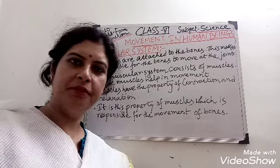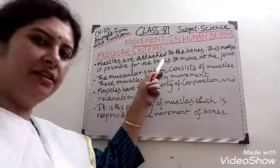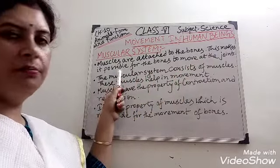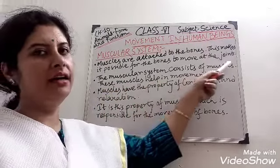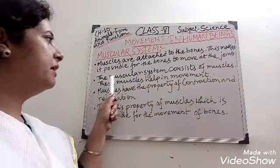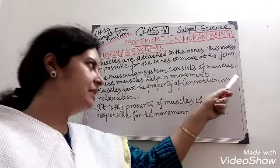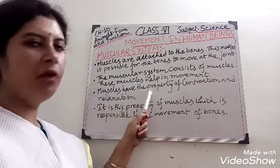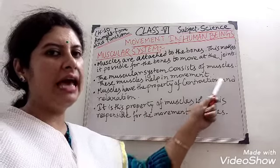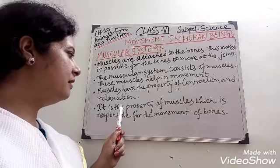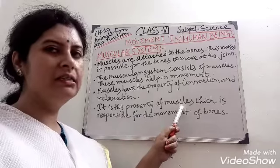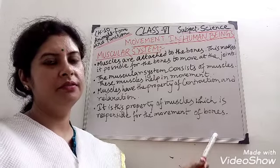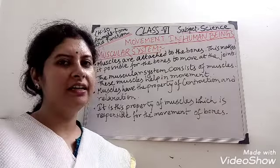The last part of this chapter is the muscular system. Muscles are attached to the bones, making it possible for the bones to move at the joints. These muscles help in movement and have the property of contraction and relaxation. This property of muscles is responsible for the movement of bones.